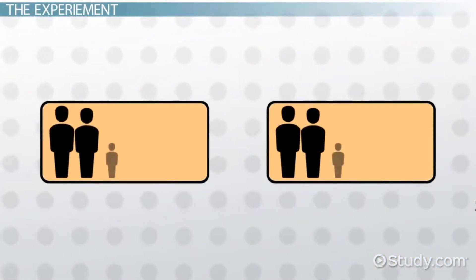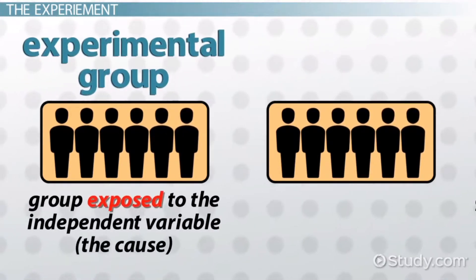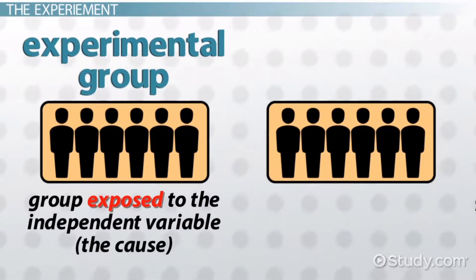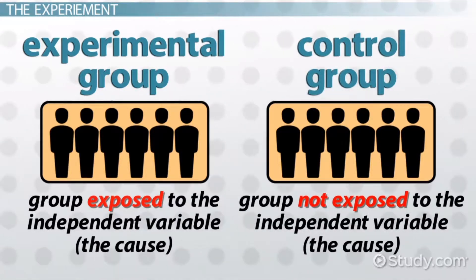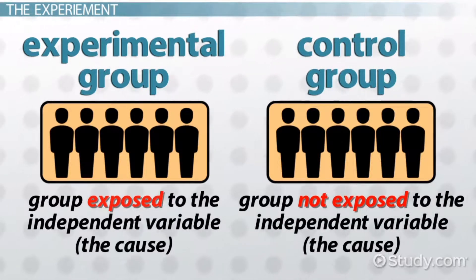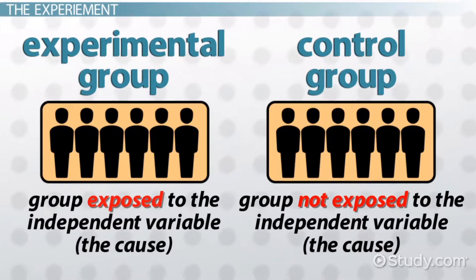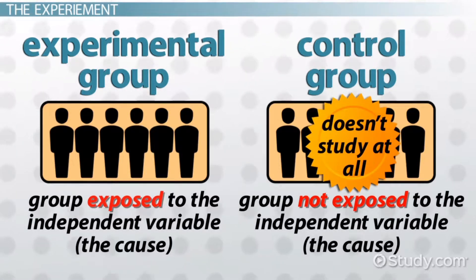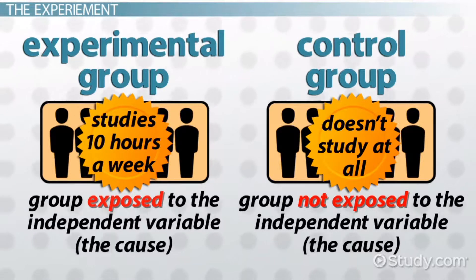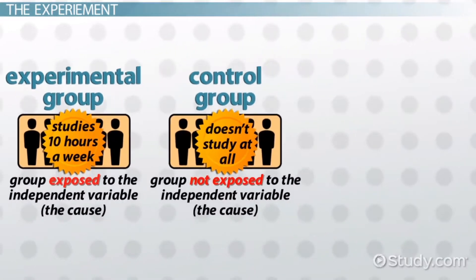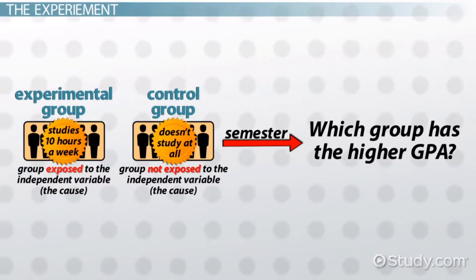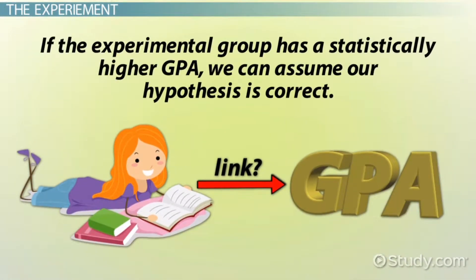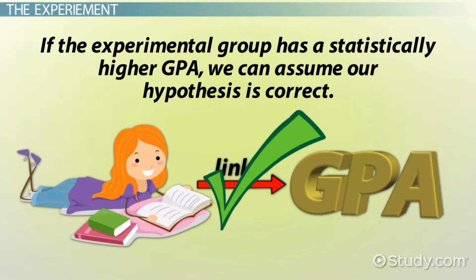If we wanted to test this hypothesis, we would randomly assign subjects into two groups. The experimental group is exposed to the independent variable, while the control group is not. We would require the control group not to study at all, but the experimental group to study at least 10 hours a week. After one semester, we would determine which group has the higher GPA. If the experimental group has a statistically higher GPA, we can assume our hypothesis is correct.